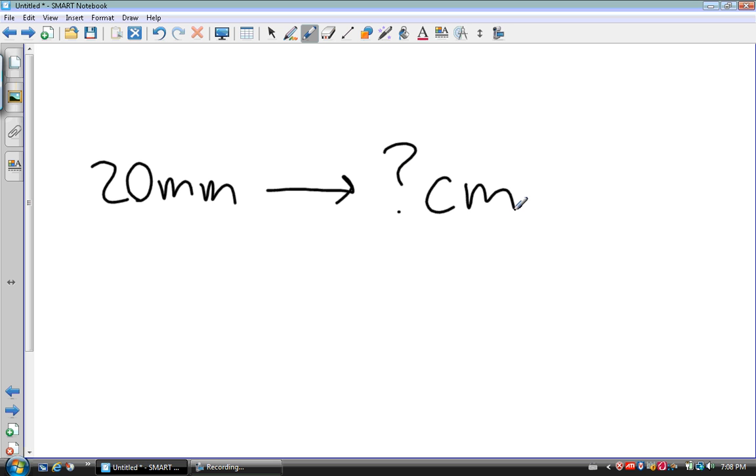I want to know how many centimeters is 20 millimeters. In order to do that, I need to know the rate between the two. You can find the rates in your textbooks or on the internet. I'll give you one: there are 10 millimeters for every one centimeter. I'm going to use this rate to convert 20 millimeters into centimeters.